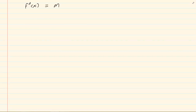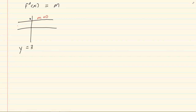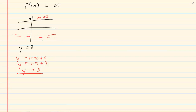Now, from previous knowledge, if I gave you a Cartesian plane and I gave you a graph and told you to get the equation of this line, you'd tell me y is equal to 3. Now how is it that y is equal to 3? The gradient at this specific point is m is equal to 0. That is why you have y is equal to mx plus c, then y is equal to mx plus 3, and your m is 0, giving you y is equal to 3.